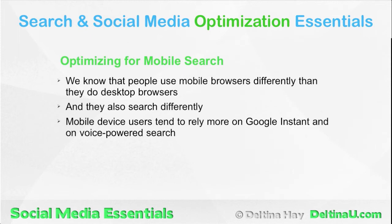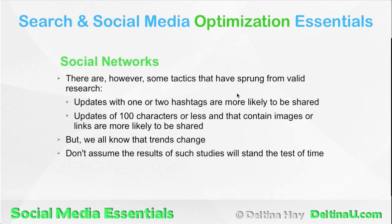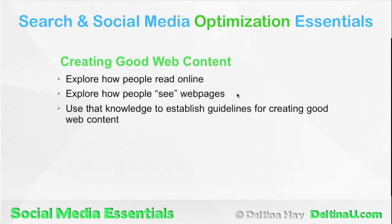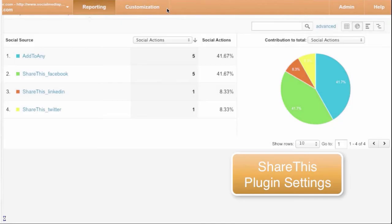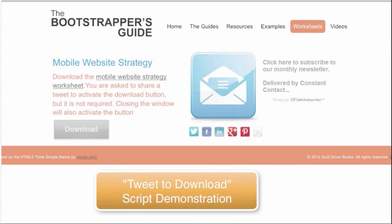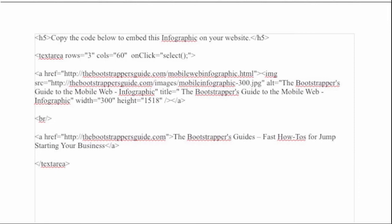Then it is time to turn our attention to optimizing for sharing, beginning with how to create more shareable content by creating shareable updates in social networks, optimizing media for sharing, and producing more shareable web content by following good web content practices based on usability studies and industry research. We explore ways of making content easier for visitors to share by incorporating sharing buttons tracked through analytics tools, and by exploring more innovative methods, like scripts that require visitors to tweet in order to download content, and creating your own embed code for content like infographics.